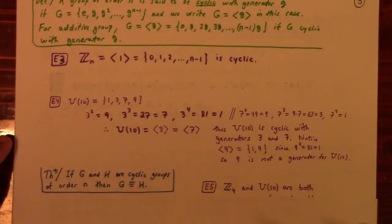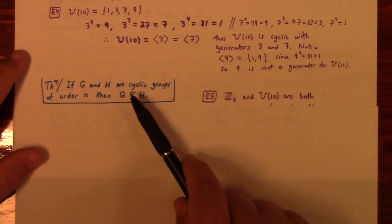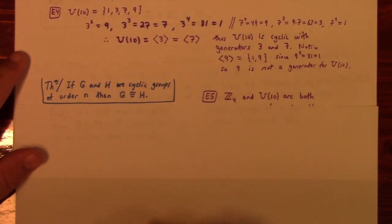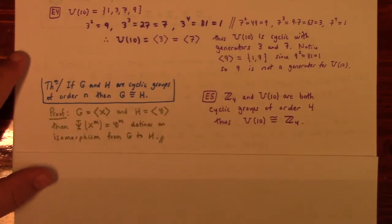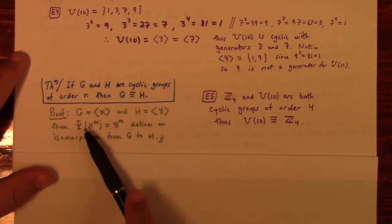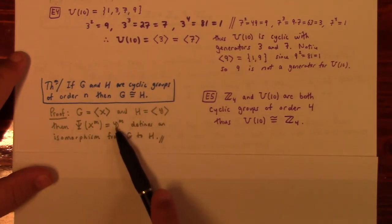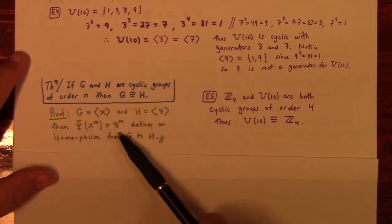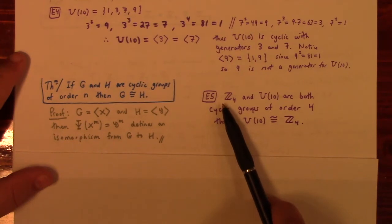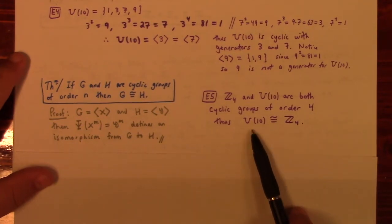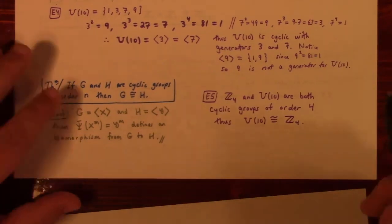Theorem: if G and H are cyclic groups of order N, then G is isomorphic to H. So any two cyclic groups of the same order are isomorphic — essentially the same group with different notation. If G is generated by x and H is generated by y with the same order, then ψ(x^m) = y^m defines an isomorphism from G to H. So Z_4 and U_10 are both cyclic groups of order 4, thus U_10 is isomorphic to Z_4.